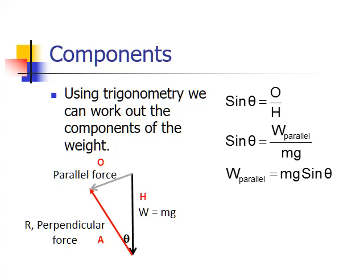Here we have a triangle on the left hand side and the parallel force is the opposite side. The perpendicular force is the adjacent and the weight is the hypotenuse. This means that the parallel part that we're interested in is the opposite and the weight is the hypotenuse, so we're looking at the sine function. The component of weight parallel to the slope is equal to mg times sine theta.